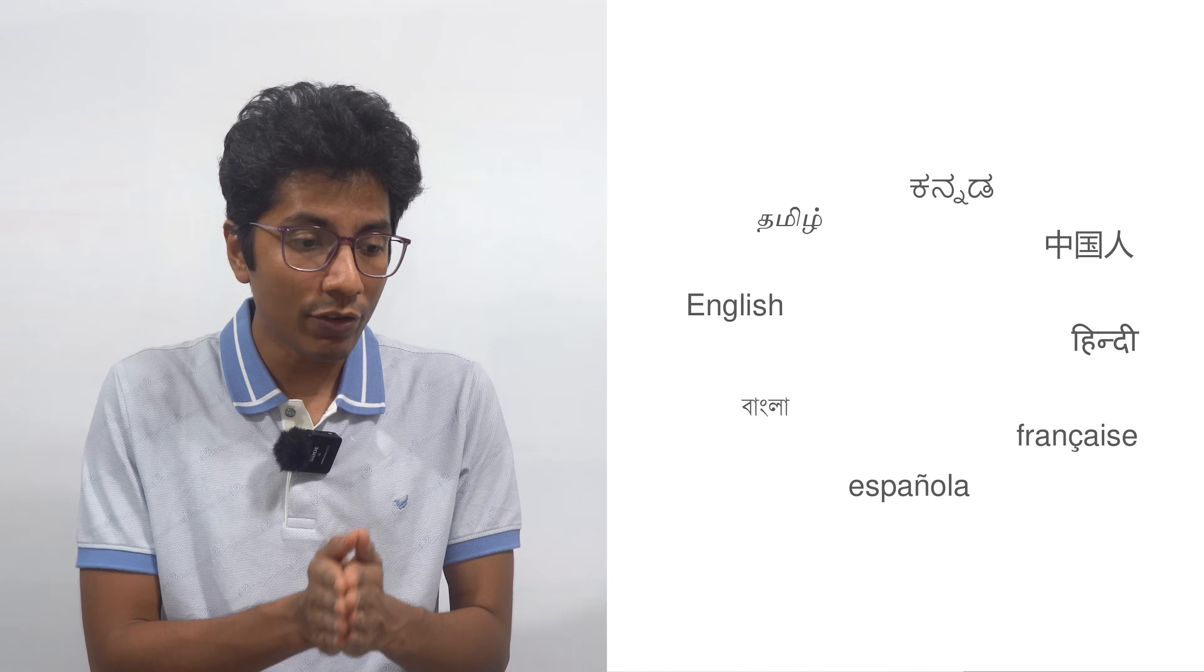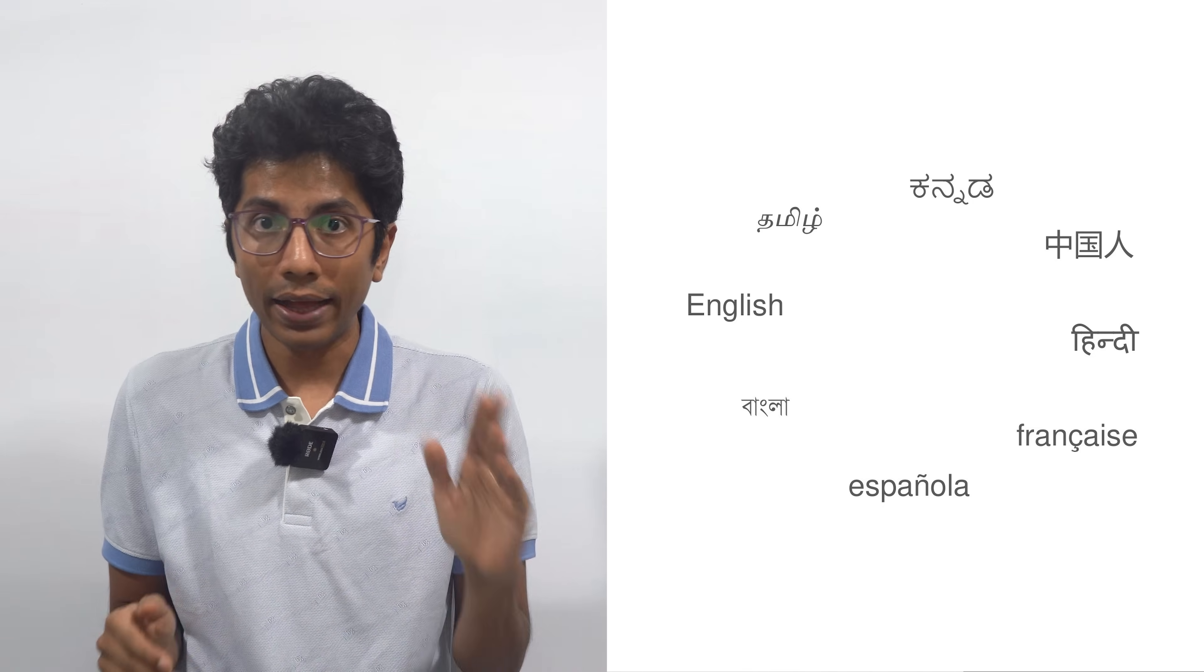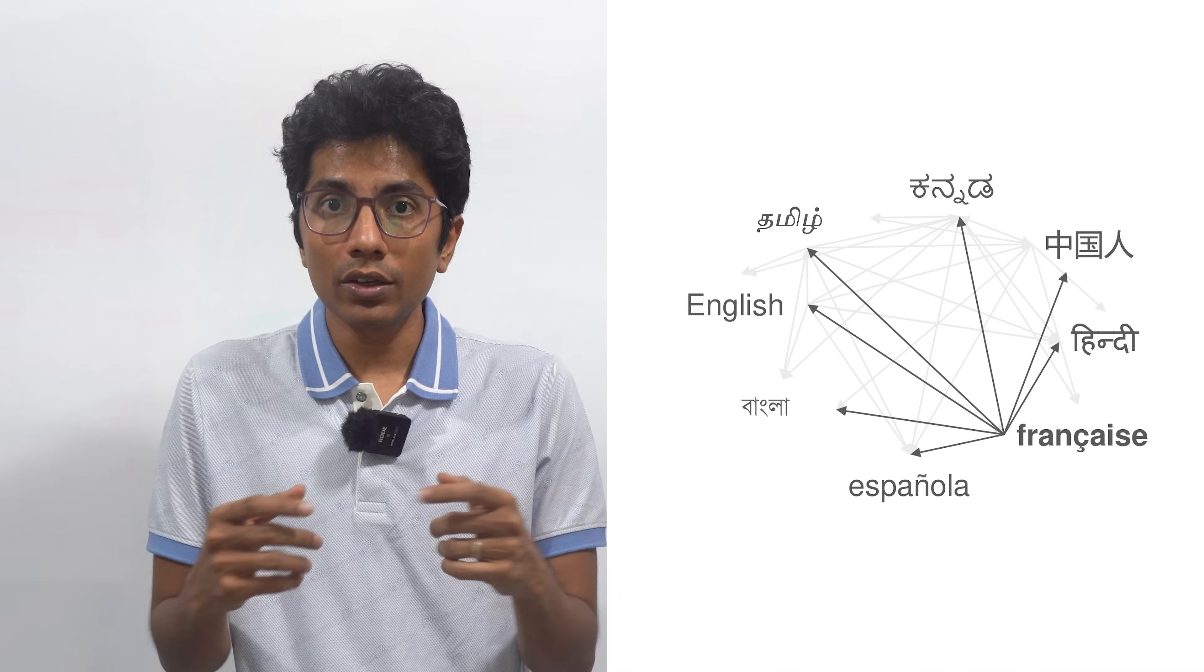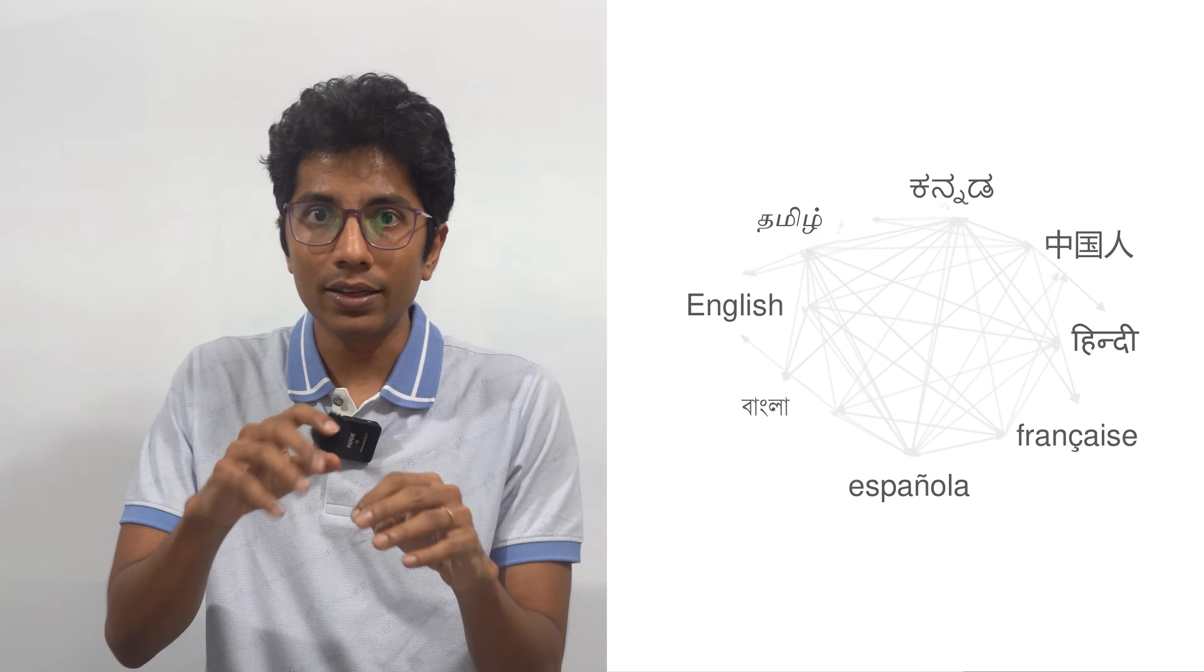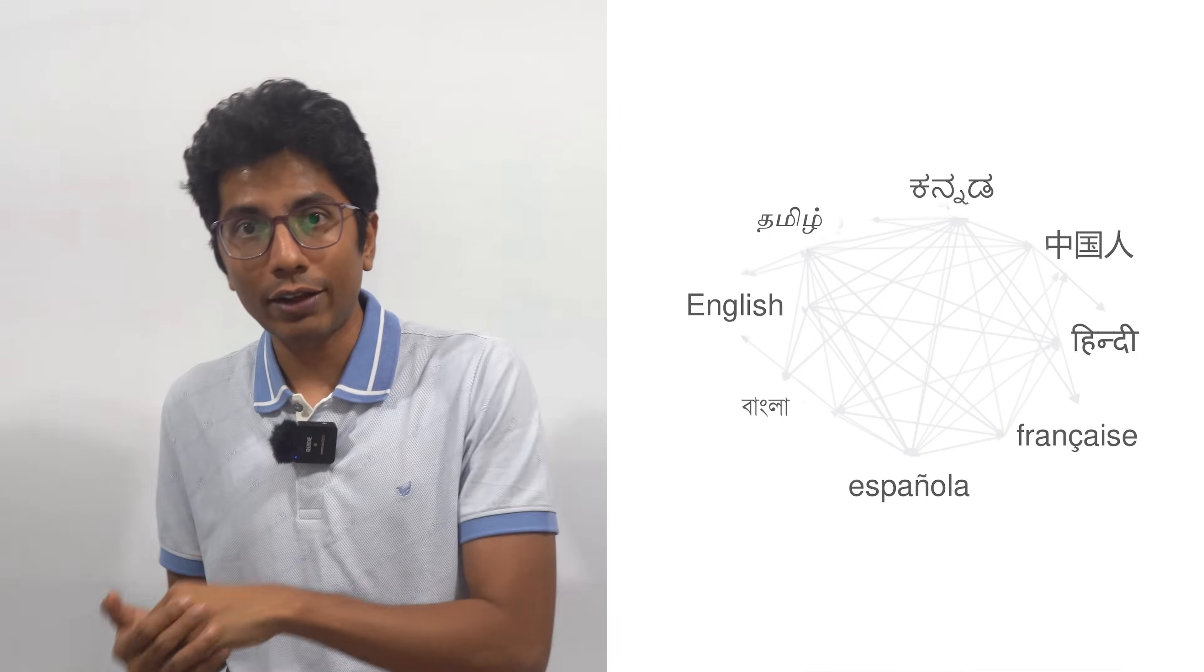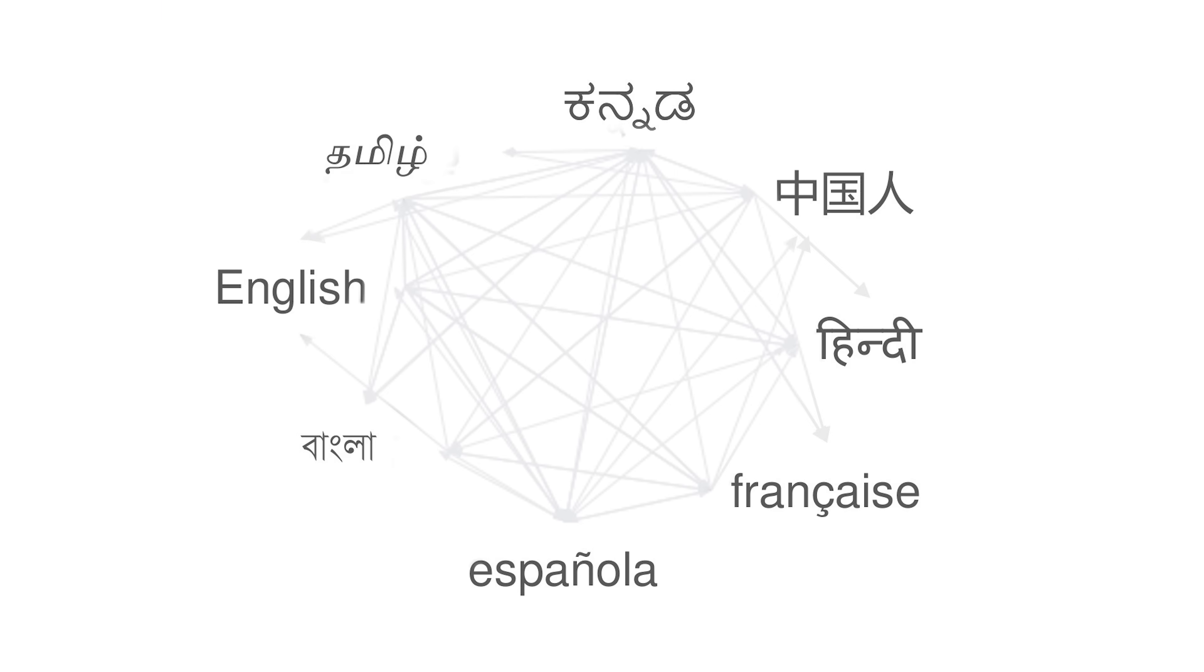So for me to improve the translation in every single language, I can do either of two things. One is I can take all the different N square combinations, where N is the number of languages in the world. And I can look at how I can translate from one language to another, or I can look at an intermediate representation into a vector space.